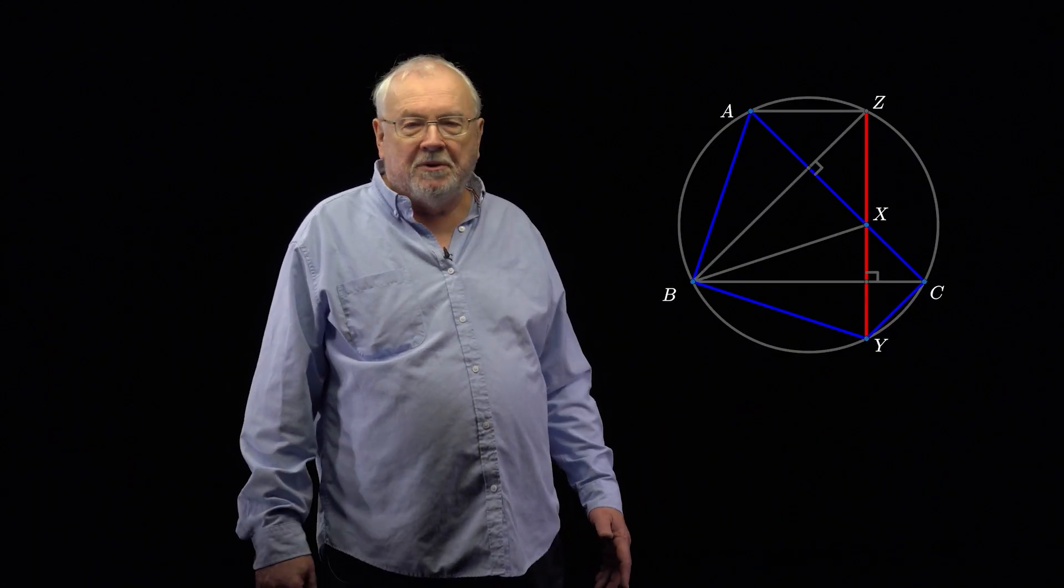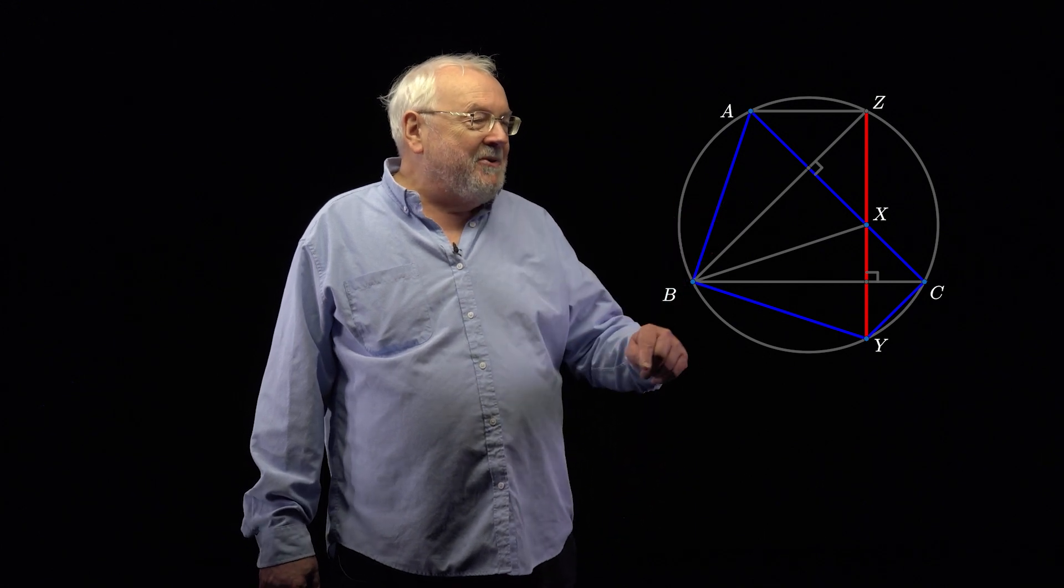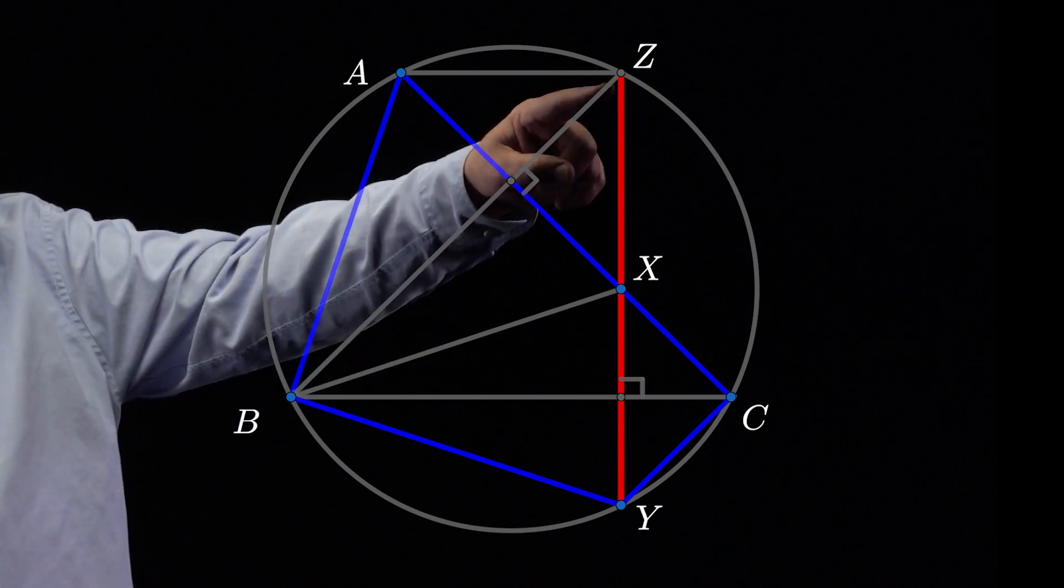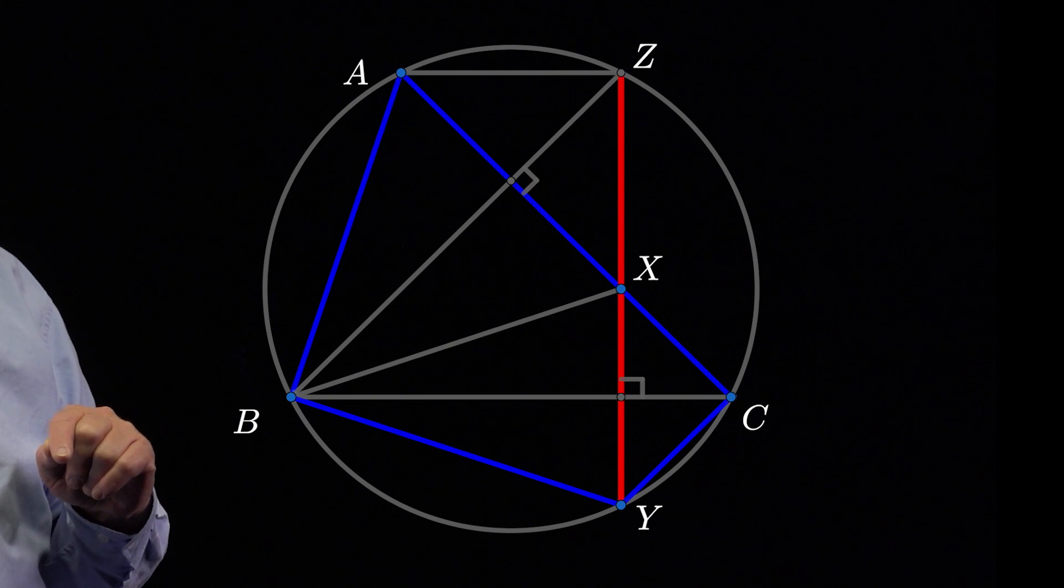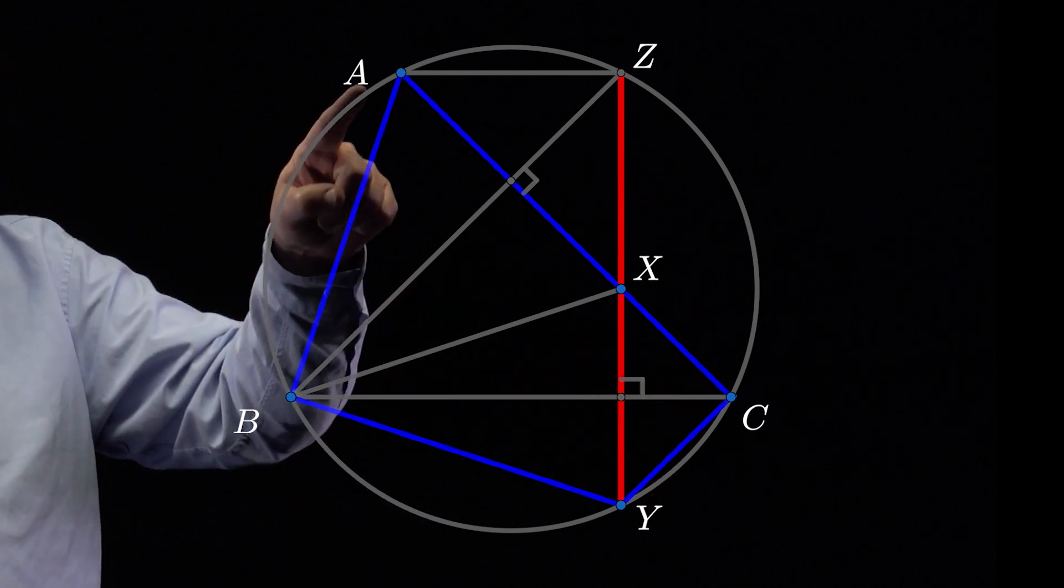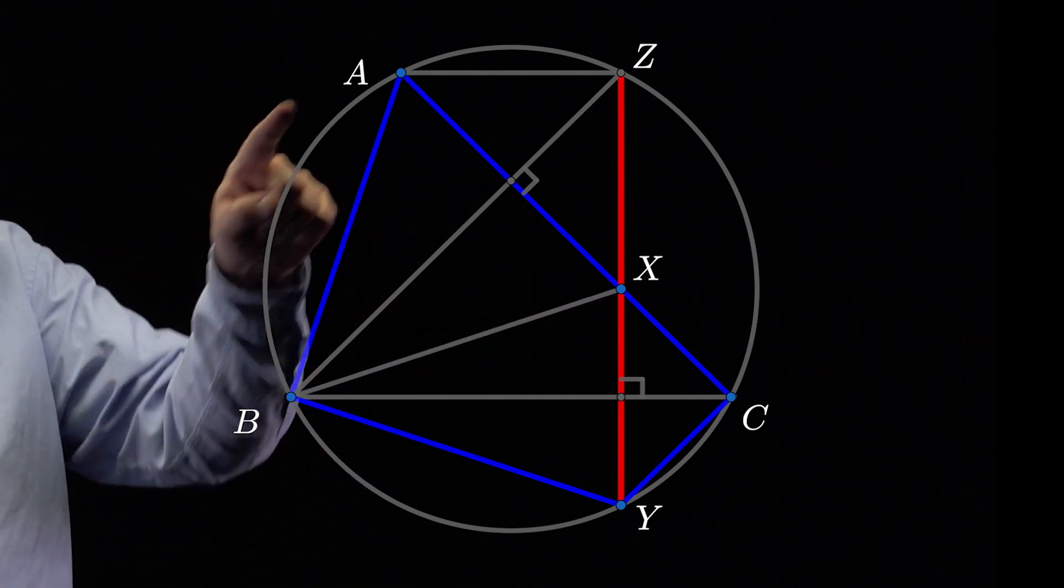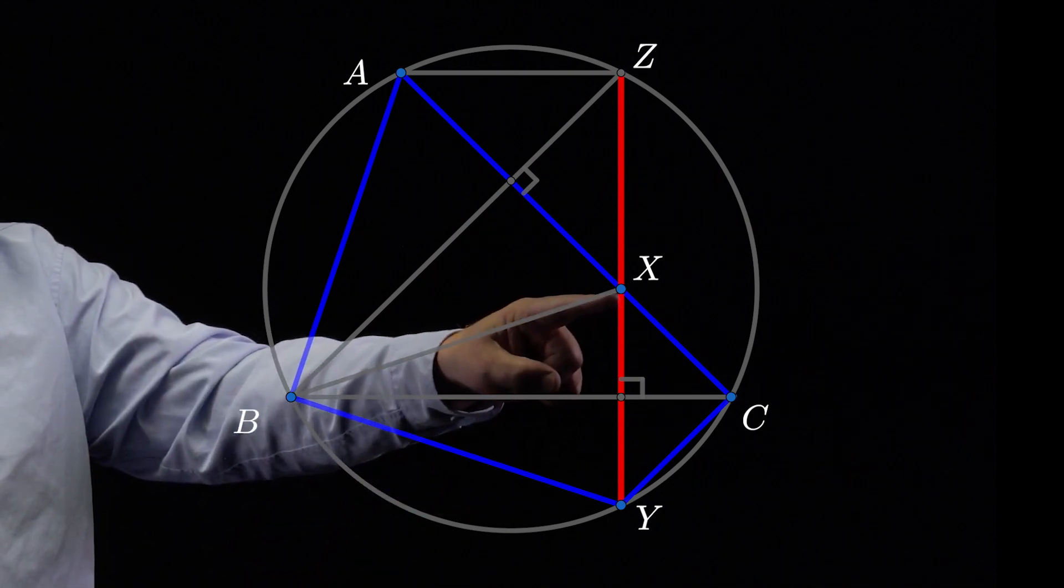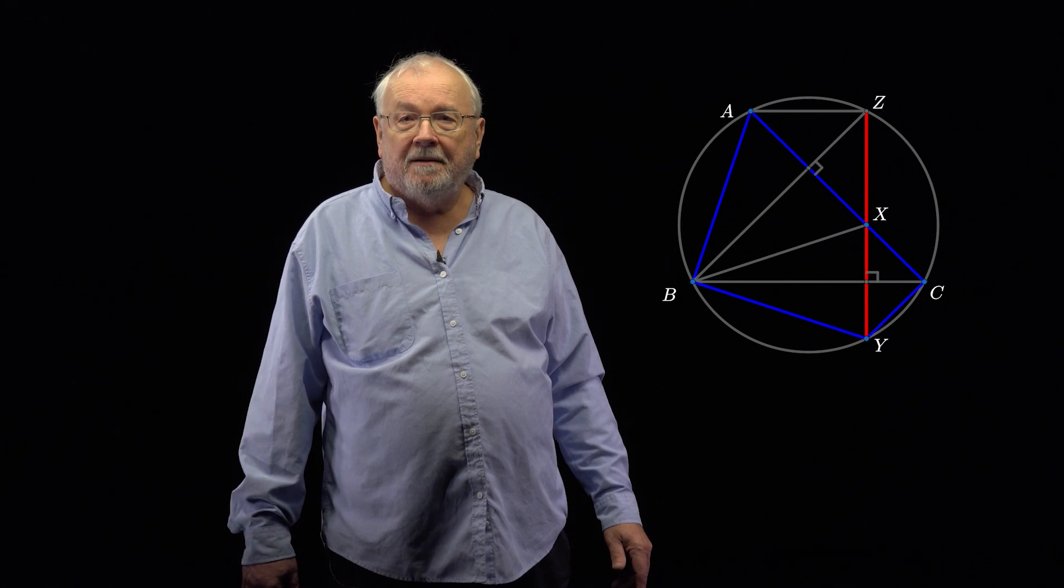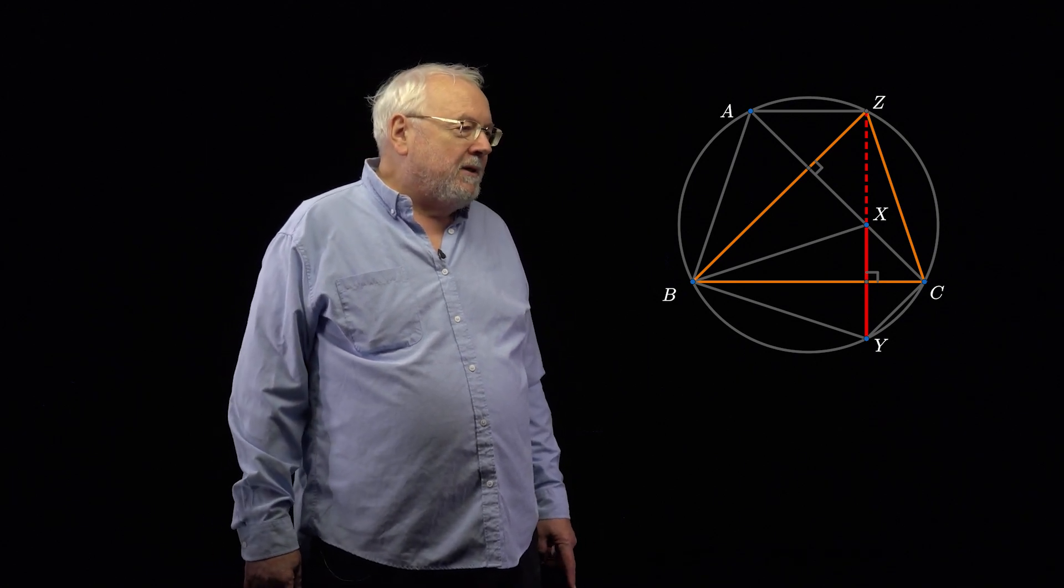So this is another way to do the problem using the reflection fact. So we provisionally define Z to be on the perpendicular bisector of AX. And this time we'll let Z hit beyond the circle. Now, look at the triangle ZBC. This point, A, is on its altitude, and X is the reflection of A in the line BZ. That means that this point here, X, must be the orthocentre of triangle ZBC by the reflection fact. So I've highlighted the triangle ZBC in a colour, so you can focus upon it.